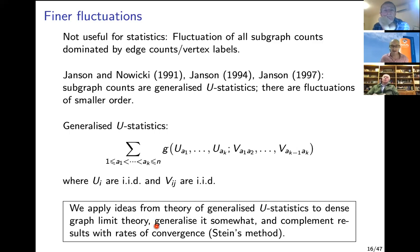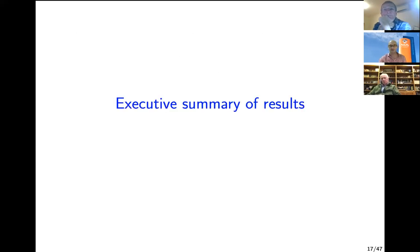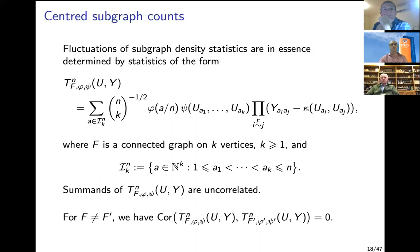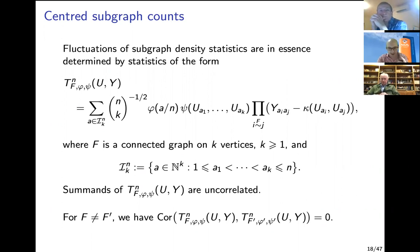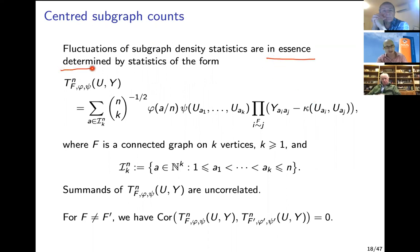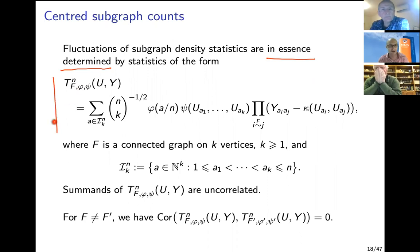We apply this theory to dense graph limit theory, generalizing it in several aspects, and complement it with rates of convergence using Stein's method. Our executive summary: the fluctuations of subgraph densities can be studied at any order, not just the dominating one. There are smaller-order fluctuations with smaller variance that are orthogonal to each other, and these are all determined in essence by statistics of a specific form.